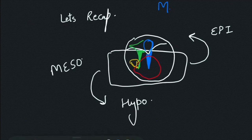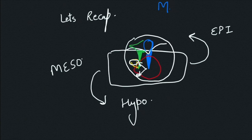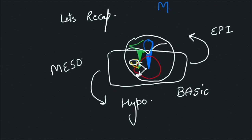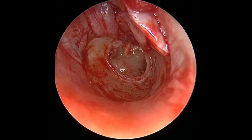The promontory lies on the medial wall of the middle ear — it is a bulge of the basal turn of the cochlea and is visible through total perforation. Posterior superior to it, where the foot plate of the stapes is, lies the oval window, and posterior inferiorly lies the round window. So: promontory, posterior superiorly the oval window, and posterior inferiorly the round window. This is what the middle ear looks like with a total perforation of the tympanic membrane.